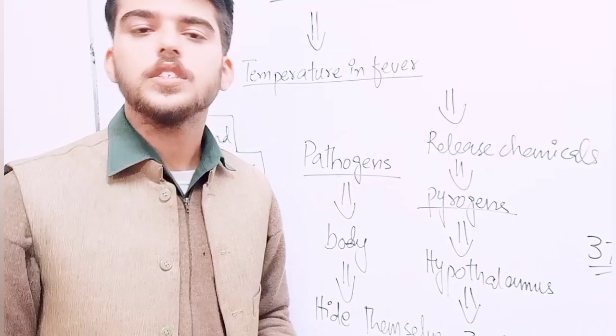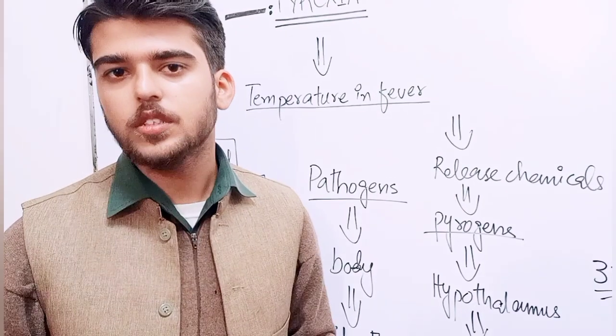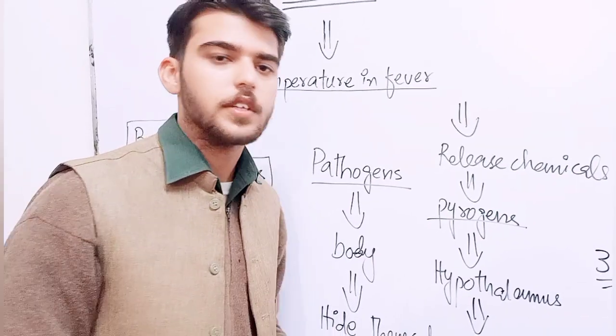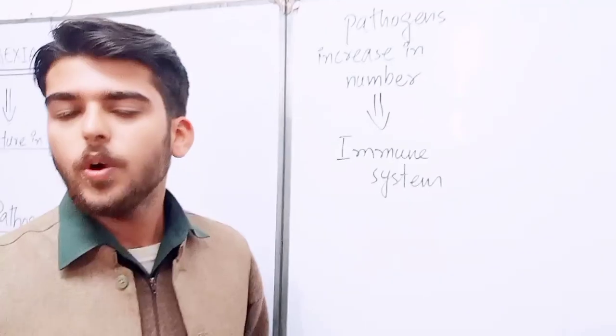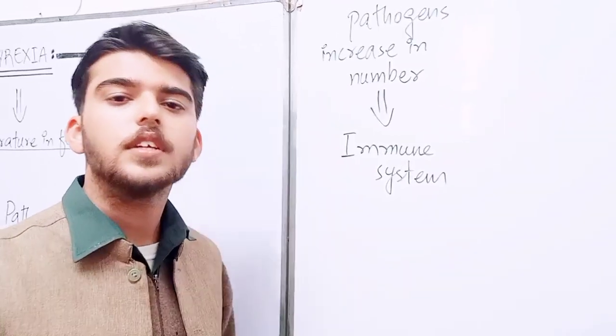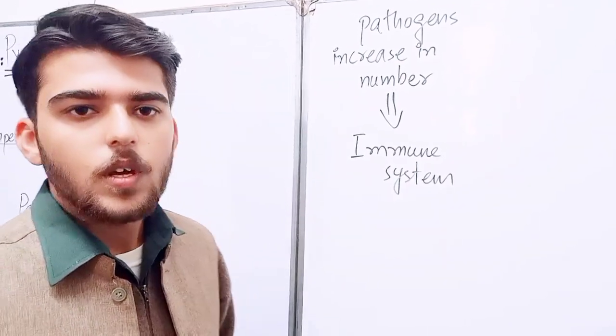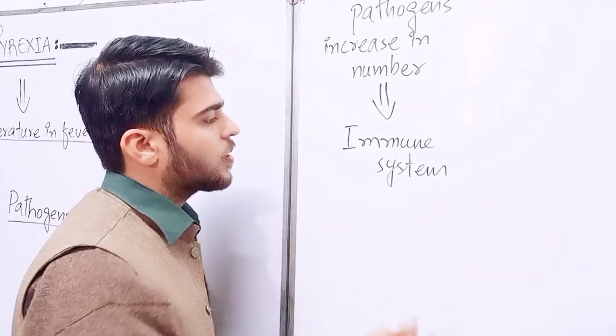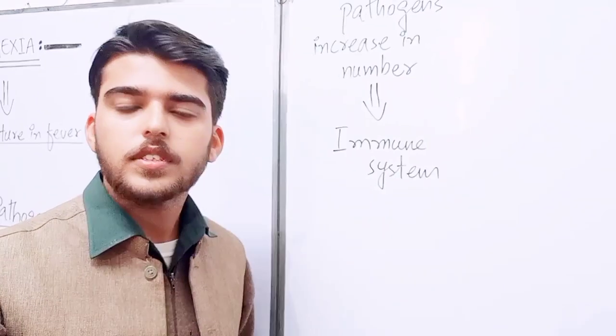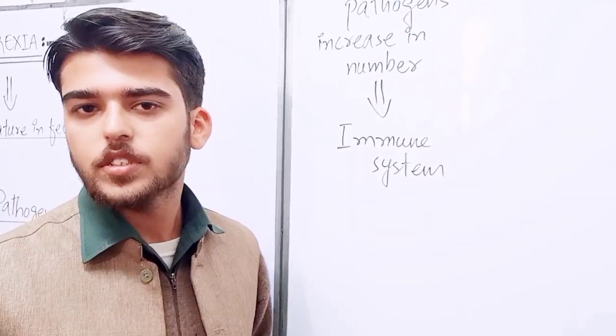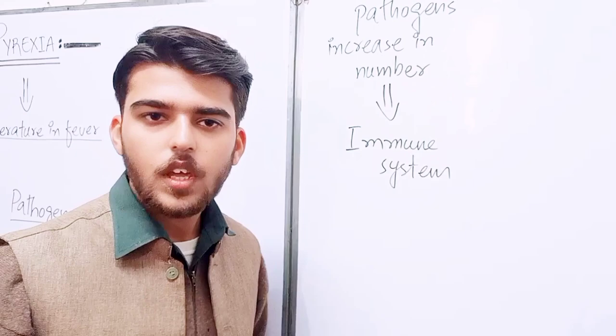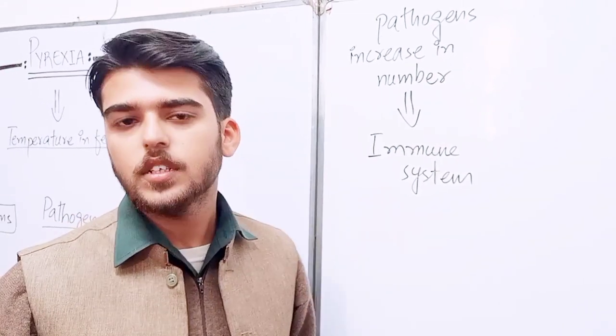Hypothalamus, pathogens or pyrogens release and their number increases. When temperature is raised to 38 degree centigrade, the pathogens increase in number. When pathogens increase in number, our leukocytes and viral cells notice that a pathogen has entered into the body.